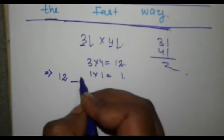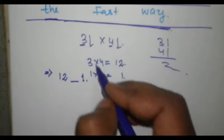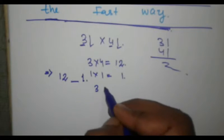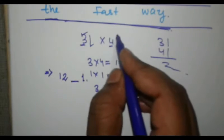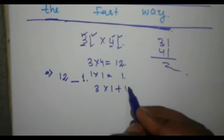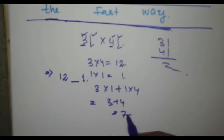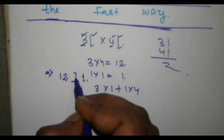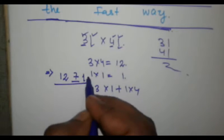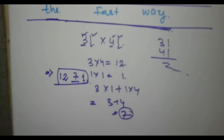The next step: 3 into 1 plus 1 into 4 — what you get is 3 plus 4 is equal to 7, and you put the 7 in the middle. So your result is 1271. Now we are going to take another example: 69 into 71.